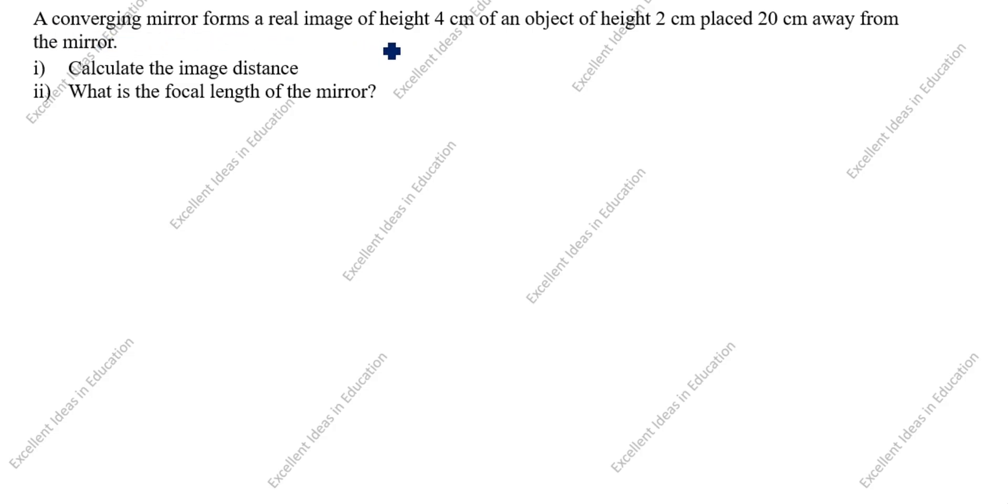A converging mirror forms a real image of height 4 cm of an object of height 2 cm placed 20 cm away from the mirror. Converging means concave mirror. Real image means we will take it as negative. What we need to find? Calculate the image distance, which is v. What is the focal length of the mirror, which is f.